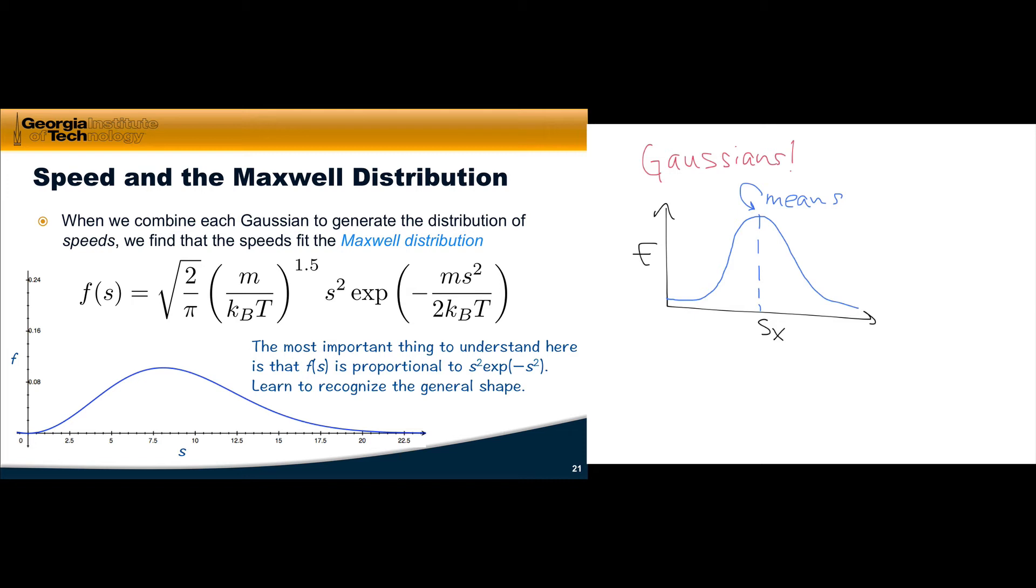Instead, when we take each of these Gaussian distributions and combine them to generate the overall distribution of speeds, we find that the speeds fit the Maxwell distribution. We won't dive into the mathematical details of how you combine the individual velocity component distributions to get the Maxwell distribution. But the most important thing to recognize here is that the fraction of particles with a particular speed is proportional to the speed squared times e^(-speed²).